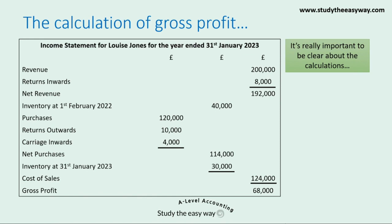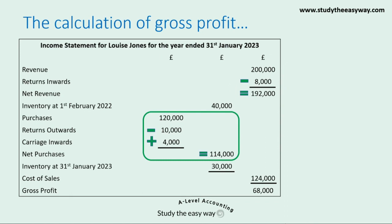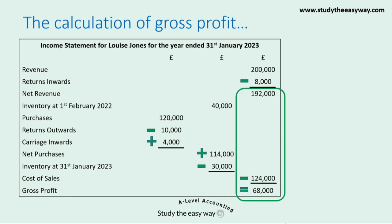It's really important to be clear about the calculations, so let's go through these one more time. You might find it useful to write out an income statement yourself and clearly label it with how the calculations are done. Net revenue is calculated as revenue minus returns inwards. Net purchases is calculated as purchases minus returns outwards plus carriage inwards. Cost of sales is calculated as opening inventory plus net purchases minus closing inventory. And gross profit is calculated as net revenue minus the cost of sales.